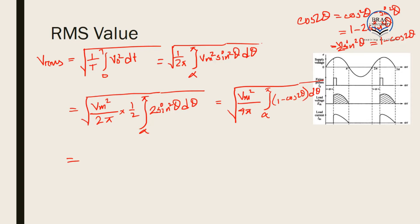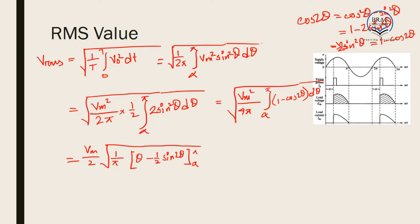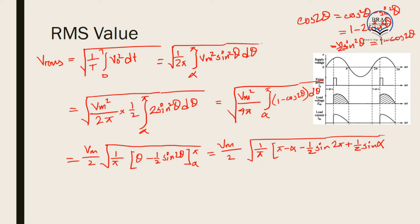Applying the limits, we get Vm over 2 times the square root of 1 over π times (π minus α minus one half sin 2π plus one half sin 2α). Since sin 2π equals 0, this simplifies to Vm over 2 times the square root of 1 over π times (π minus α plus one half sin 2α).